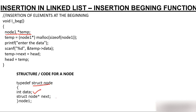We have created a structure with two parts: data and address. The address part is of type struct node — that is a self-referential structure. We have used typedef so that the entire structure is now represented simply by node1, making it easier to write. So instead of writing struct node we just write node1. temp is a pointer of type node1.